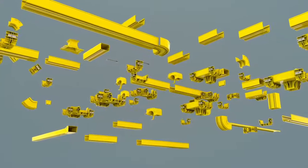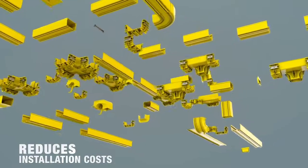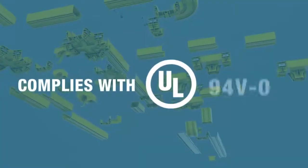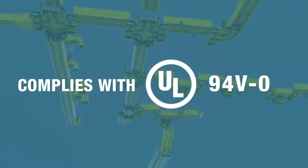Panduit's Fiber Runner cable routing system reduces installation costs when compared to typical cable routing systems. The Fiber Runner has been rated to comply with UL 94V-0, which is one of the more stringent flame test requirements.